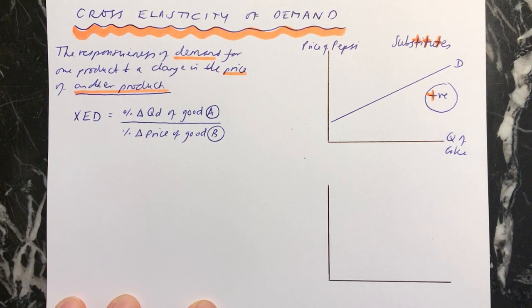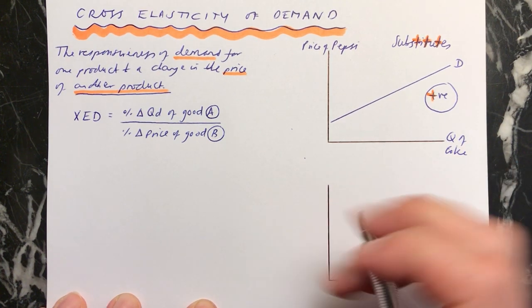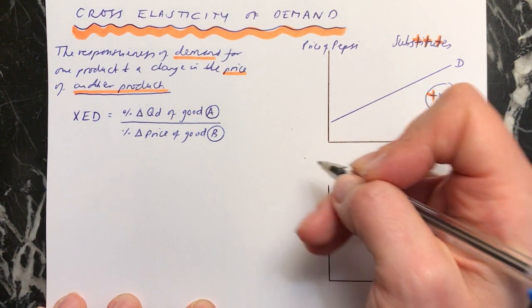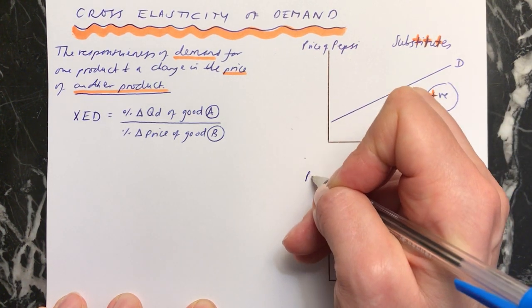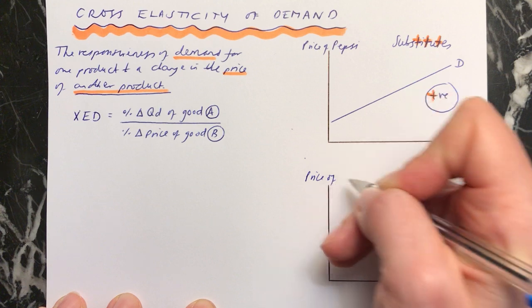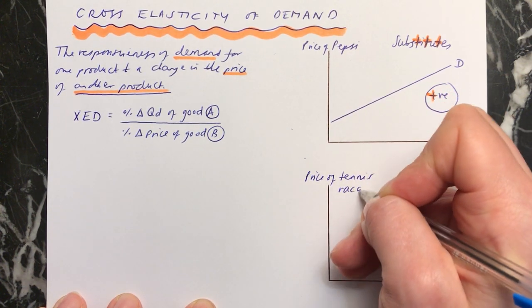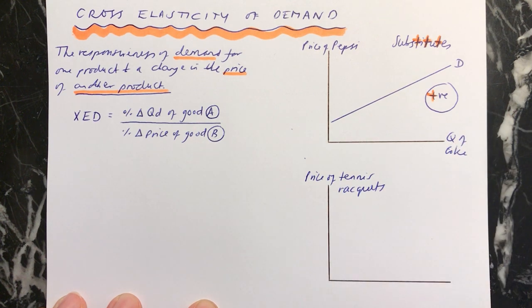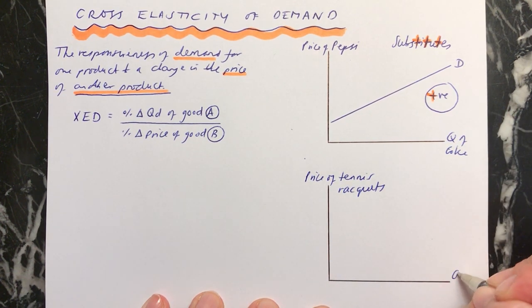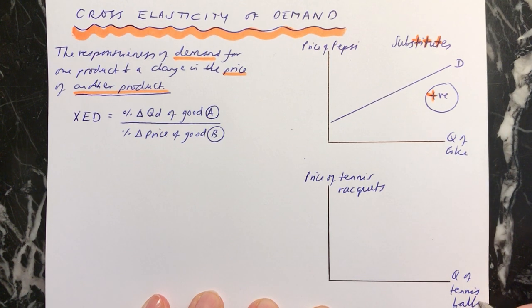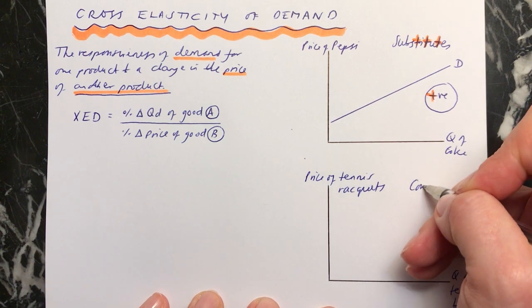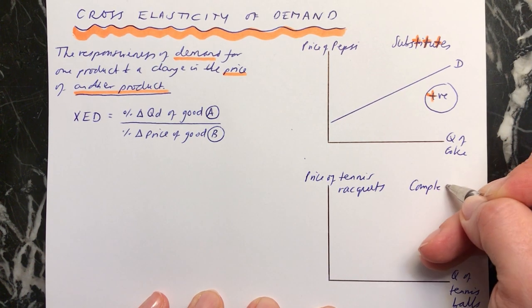We can have other products which you buy together. For example, you could have the price of tennis rackets on this axis, and the quantity of tennis balls on this axis.